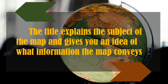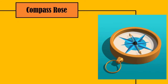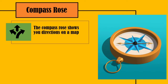Next is the compass rose, also called the wind rose or the rose of the winds, which is used to display the orientation of the cardinal directions and their intermediate points. In short, the compass rose shows your directions on a map.